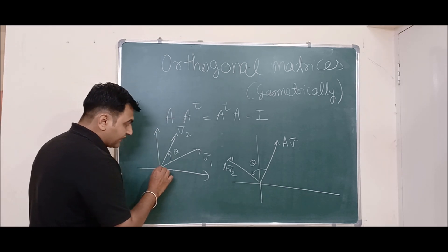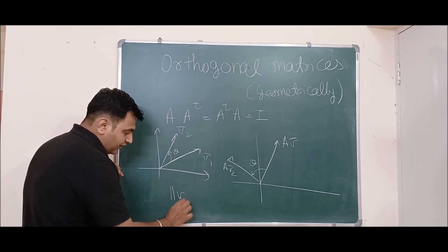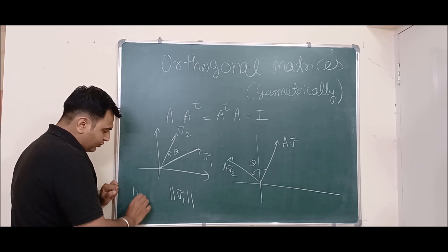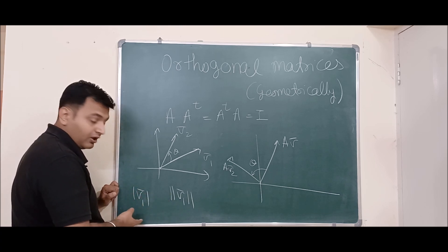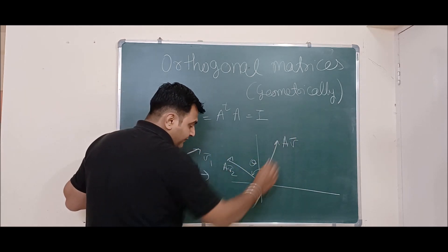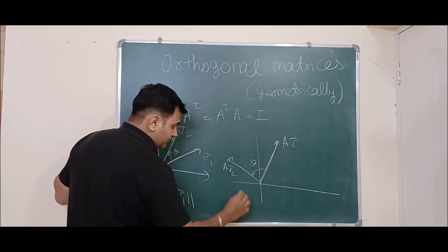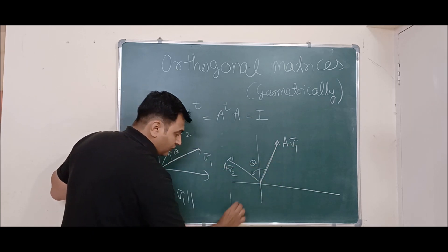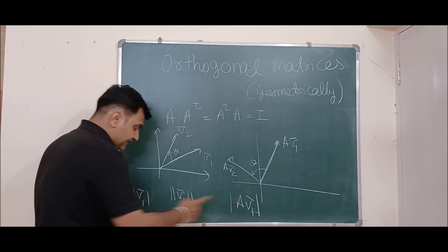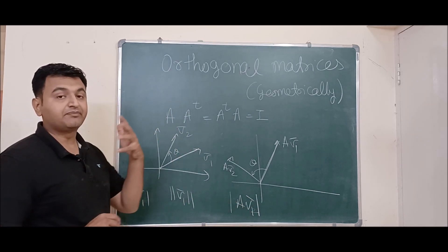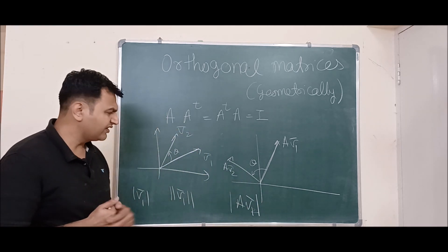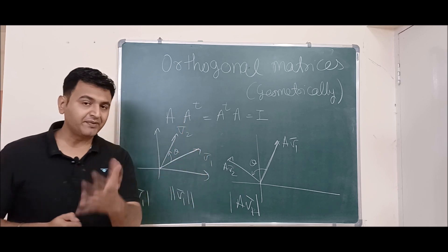The second property is that it preserves length. If v₁ is a vector of some length — denoted as the norm of v₁, or mod of v₁ — and you apply the orthogonal matrix A to get Av₁, then under orthogonal matrices this length and that length will always be the same. That means lengths are preserved under orthogonal matrices.